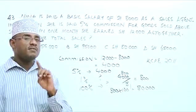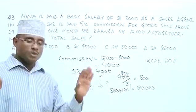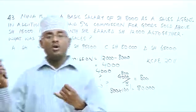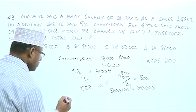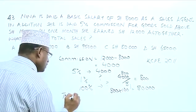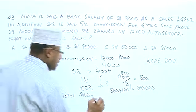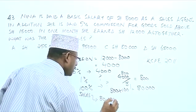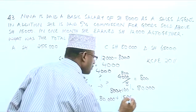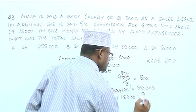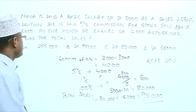But remember, we also have sales on which she cannot earn any commission, and that is $15,000 — from $0 up to $15,000, no commission. So total sales now will be the sales on which she earned commission plus the sales on which she cannot get any commission: $80,000 plus $15,000, which gives us $95,000. So this is the total sales for that particular month, and our answer is B.